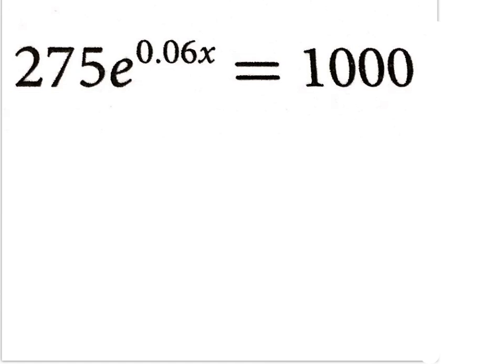These are exponential equations because your variable is in your exponents. Anytime that happens it's called an exponential equation. What you need to try to do is isolate it the best you can. So what I'm going to do first right here is divide both sides by 275.